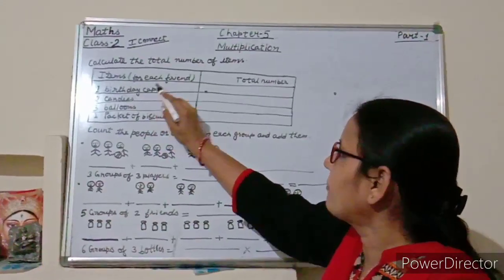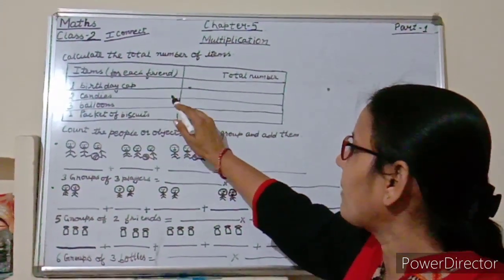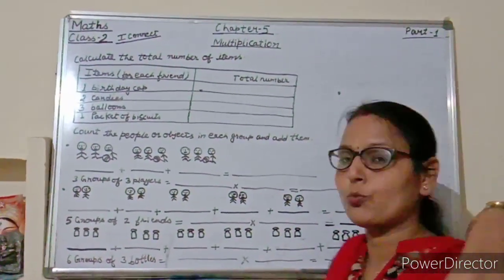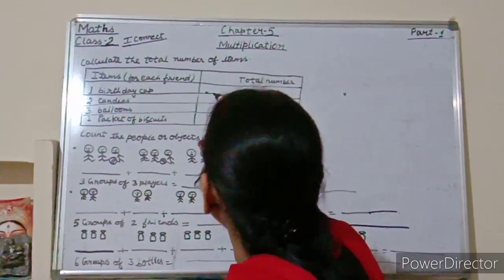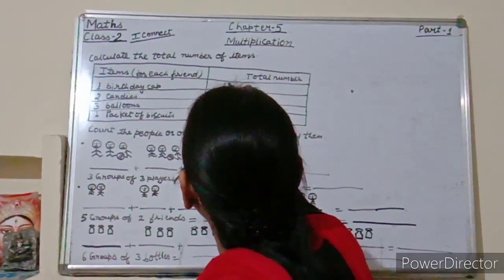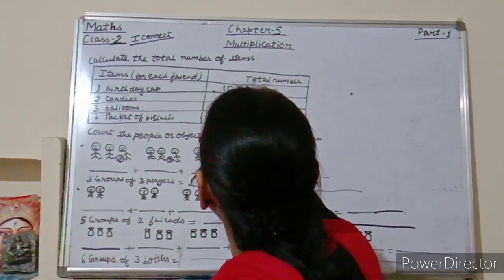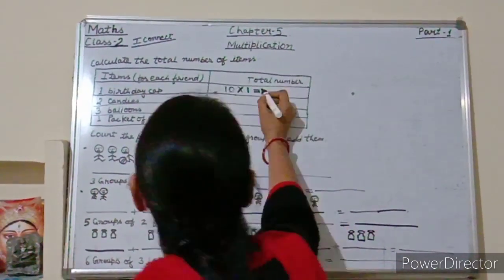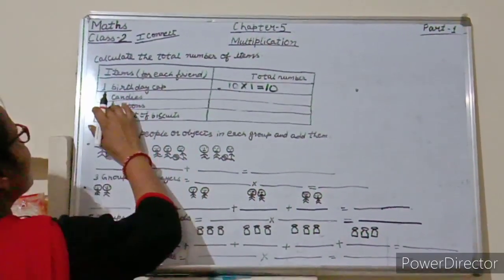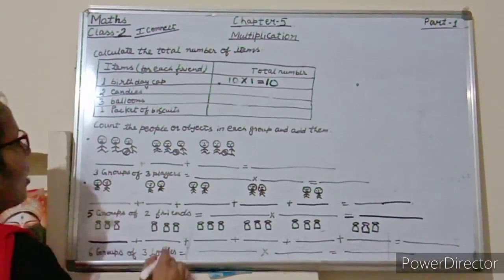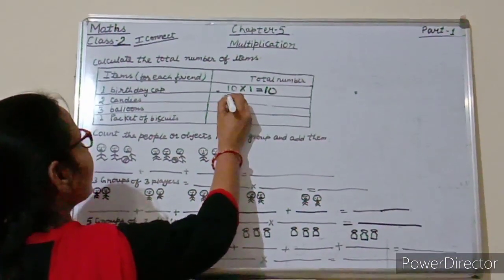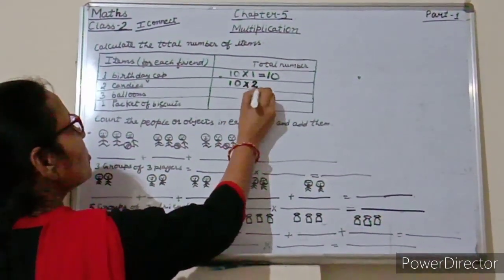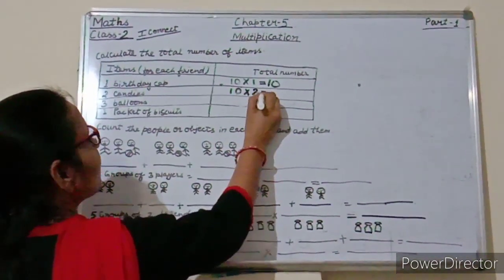One birthday cap for each friend — so how many birthday caps does he have to purchase? There are 10 friends, so 10 into 1 is equal to 10 ones are 10. Now here 2 candies for each friend. 10 friends and 2 candies for each friend, so 10 into 2 is equal to 20.